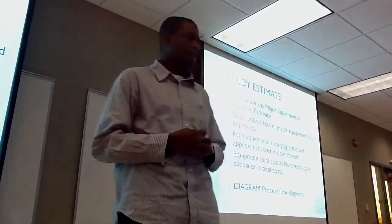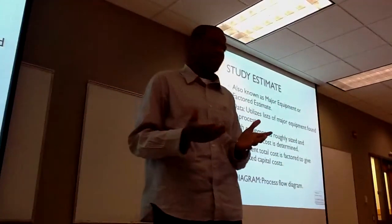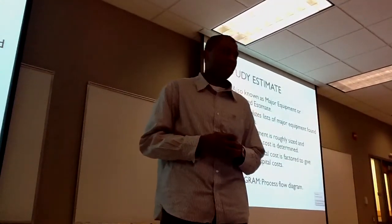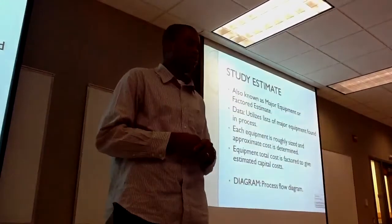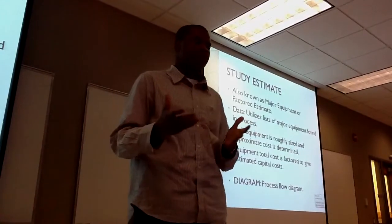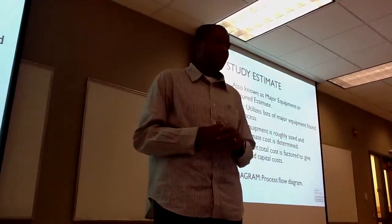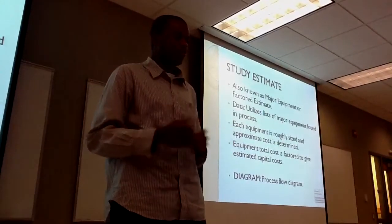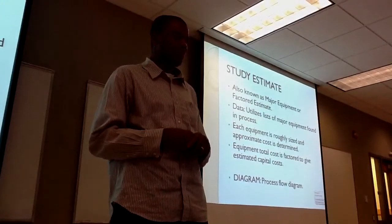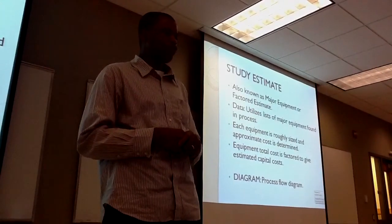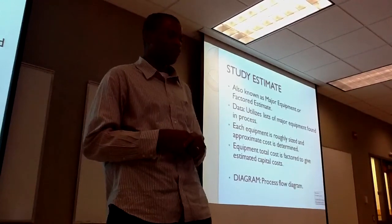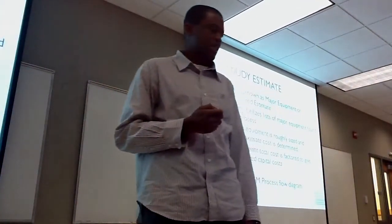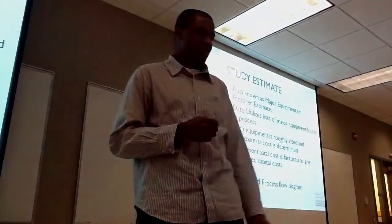The next is the study estimate, also known as the major equipment or factor estimate. The data needed includes the major equipment found in the processes, where each equipment is roughly sized and an approximate cost is determined. The total cost is then factored to give the estimated capital cost. The diagram required here is the process flow diagram.